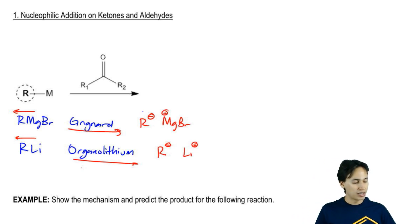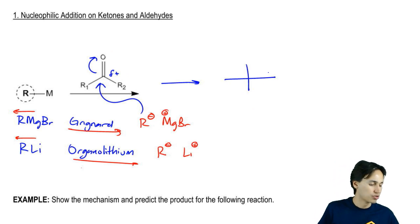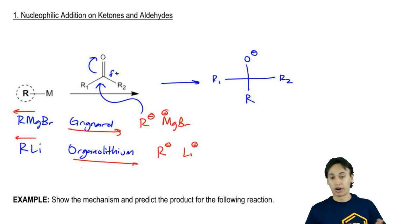When that R negative sees the carbonyl, we're just going to do nucleophilic addition. We're going to attack the partial positive carbon, move the electrons up. What we're going to get is a tetrahedral intermediate, O negative, R1, R2. But now I have my new R group. I'll just call it R since that's the one that I just added.